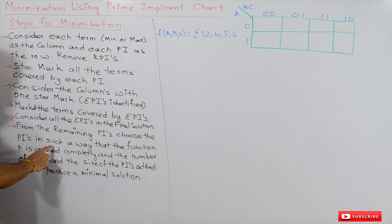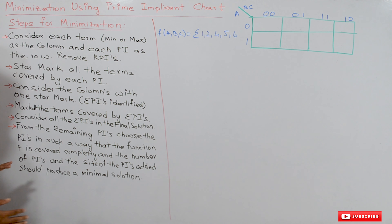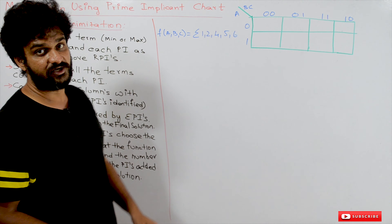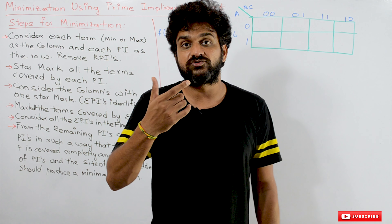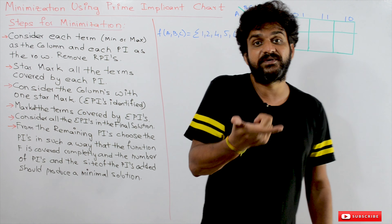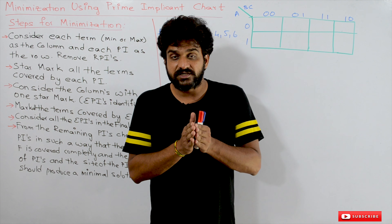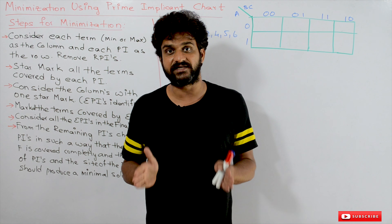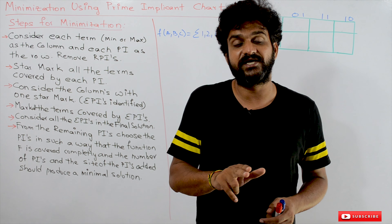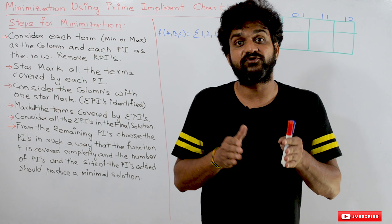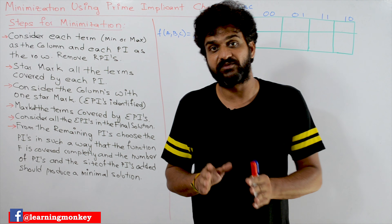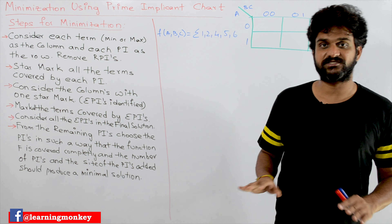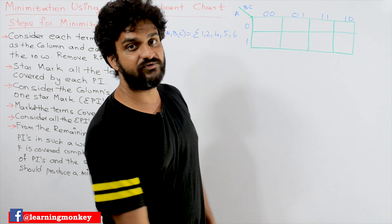From the remaining PIs, choose them in such a way that the function is covered completely. The number of PIs and the size of the PIs added should produce a minimal solution — maximum size PIs and the minimum number of PIs — to obtain the minimal solution.